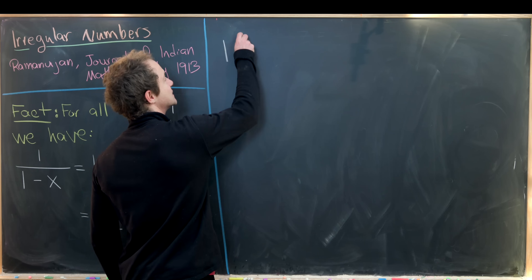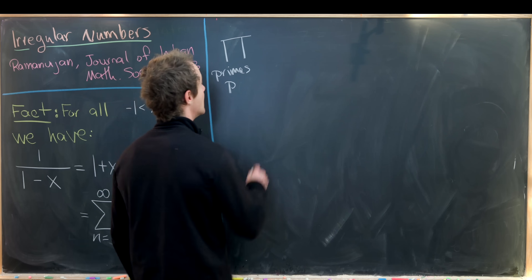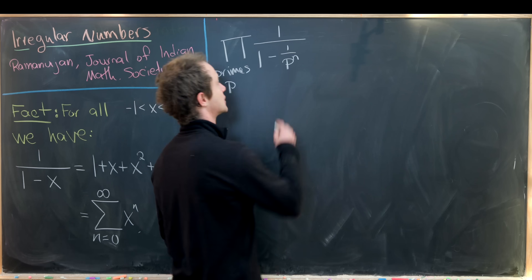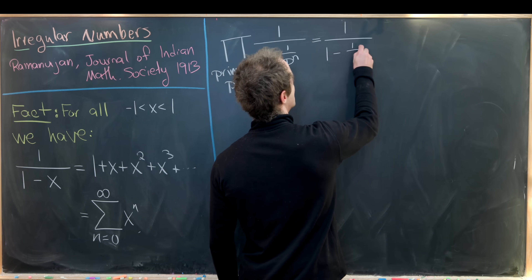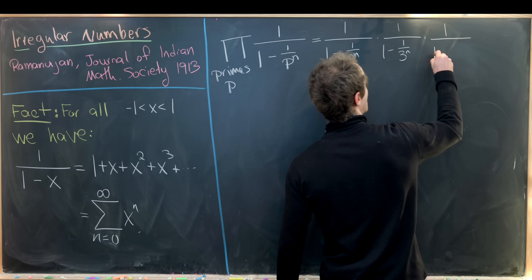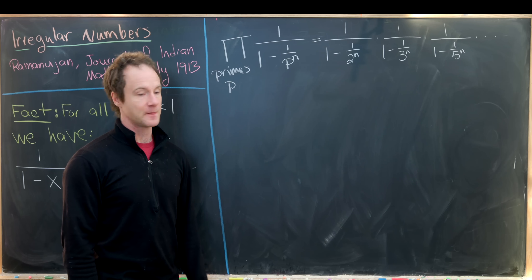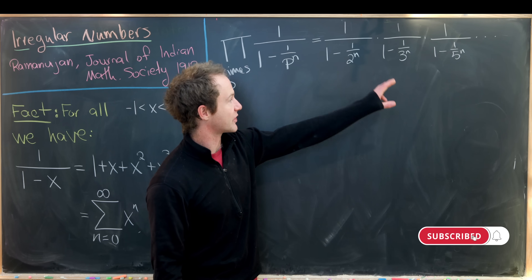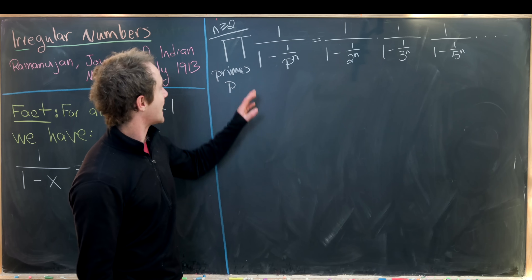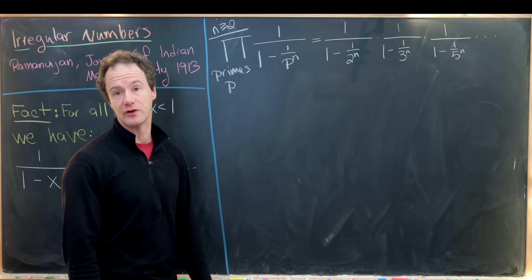Now let's look at the following object. We'll take the product over all prime numbers p of 1 over 1 minus 1 over p to the n. Writing out the first few terms, we have 1 over 1 minus 1 over 2 to the n, times 1 over 1 minus 1 over 3 to the n, times 1 over 1 minus 1 over 5 to the n, and so on. That's an infinite product given that there are infinitely many primes. Notice that all of these numbers — 1 over 2 to the n, 1 over 3 to the n, 1 over 5 to the n — will be between negative 1 and 1 if n is greater than or equal to 2. Note that n needs to be at least 2, not 1, because this does not converge if n equals 1.